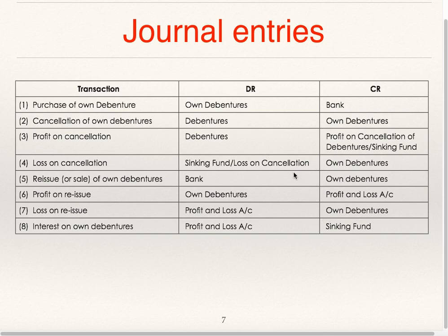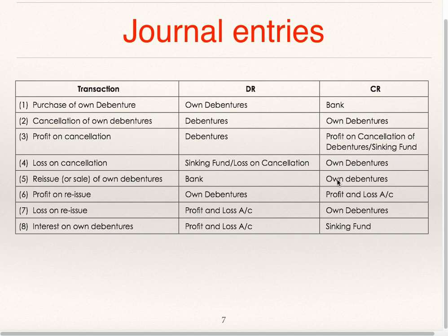Supposing instead of cancelling, the company has reissued these own debentures, it will be either at profit or at loss and will get transferred to profit and loss account. For example, if the company purchased own debentures at 90 and reissued at 110, the entry is: bank account debit 110 to own debentures 110; debit 90, credit 110 — the profit of 20 rupees gets transferred to profit and loss account. For a loss, the opposite entry is passed. Interest on own debentures: profit and loss account debit to sinking fund. Now we will see one illustration.